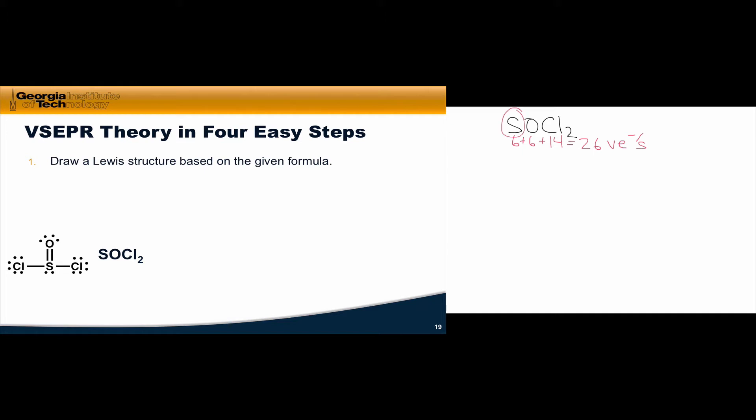Sulfur is the least electronegative atom in this structure, and so it's most likely to be at the center with the highest valence. Oxygen and the two chlorines are likely to be bonded around the sulfur atom. The connections between sulfur and oxygen and the two chlorines knock out six of the valence electrons, and so now we've got 20 left to distribute as non-bonding lone pairs or multiple bonds.